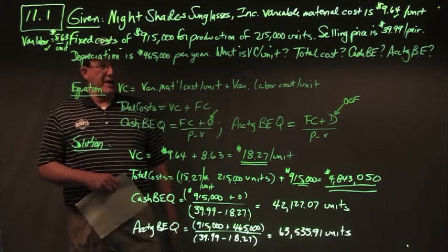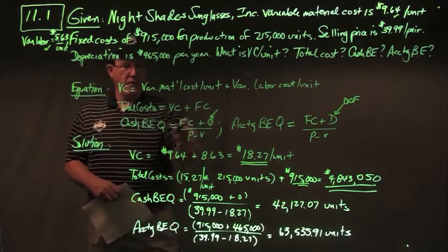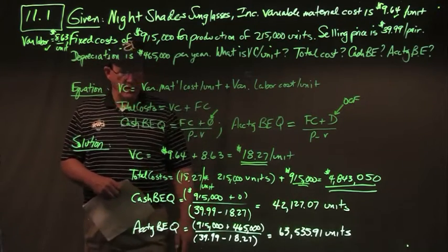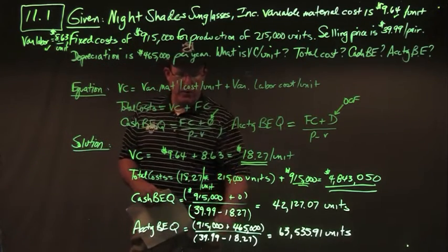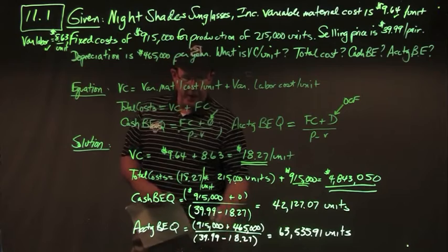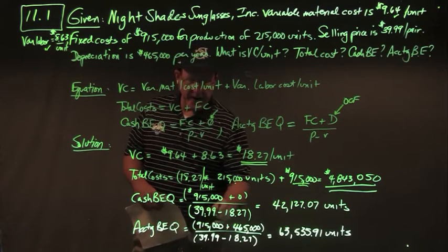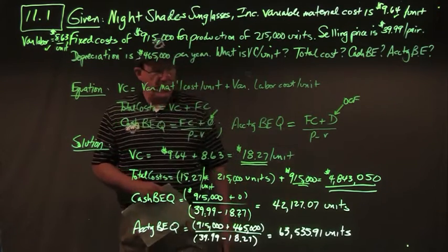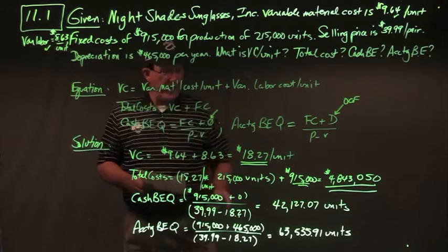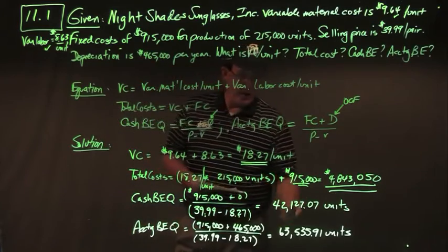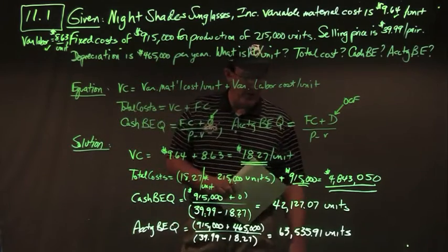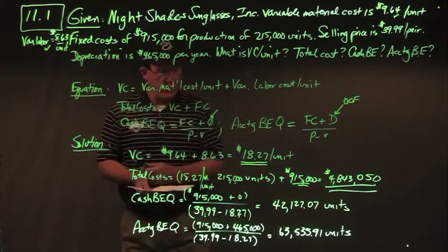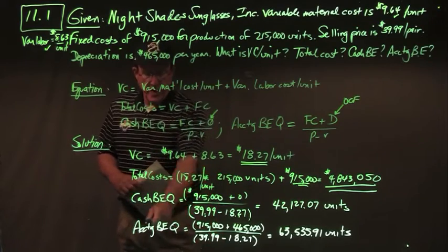Cash break-even quantity is fixed cost plus zero over contribution margin: $915,000 plus zero over selling price $39.99 minus variable cost $18.27, giving $42,127.07 units. We'd round that up for production purposes.